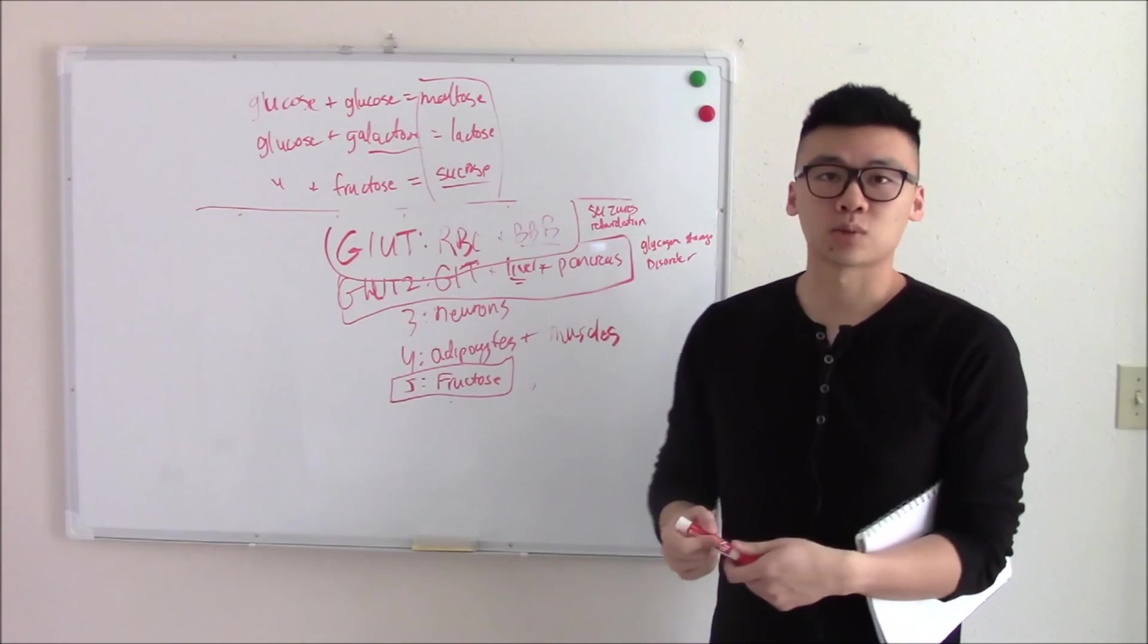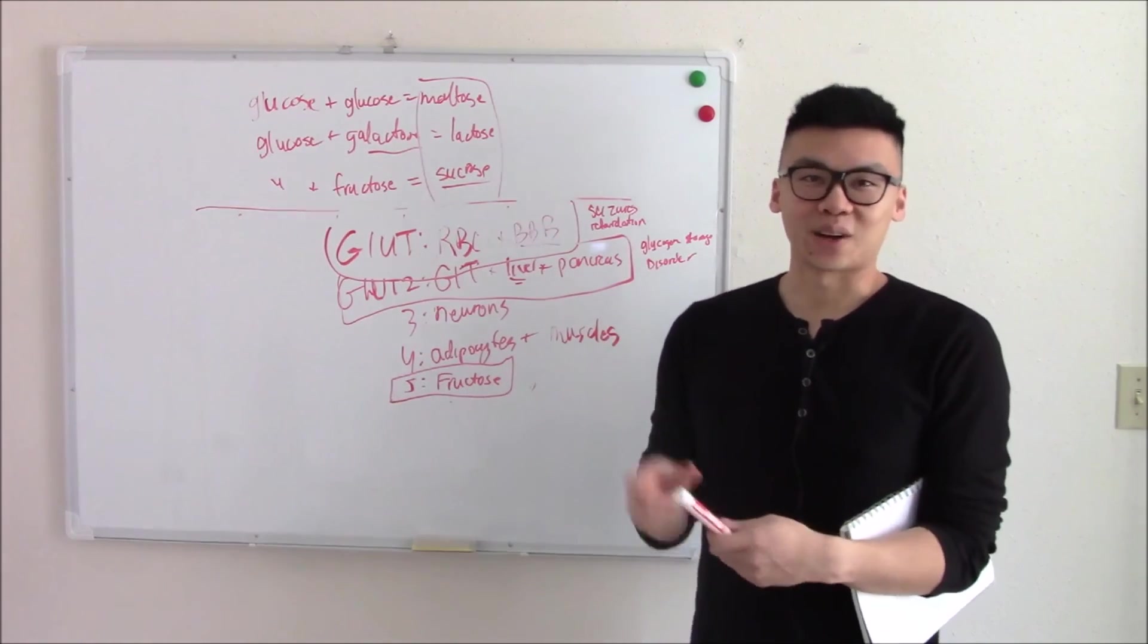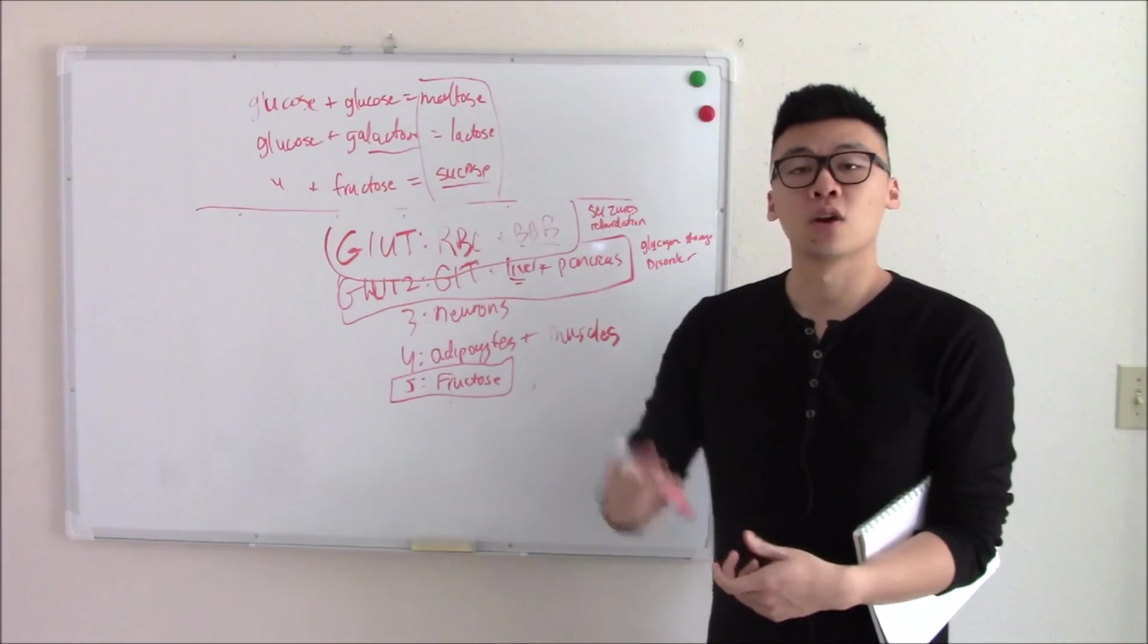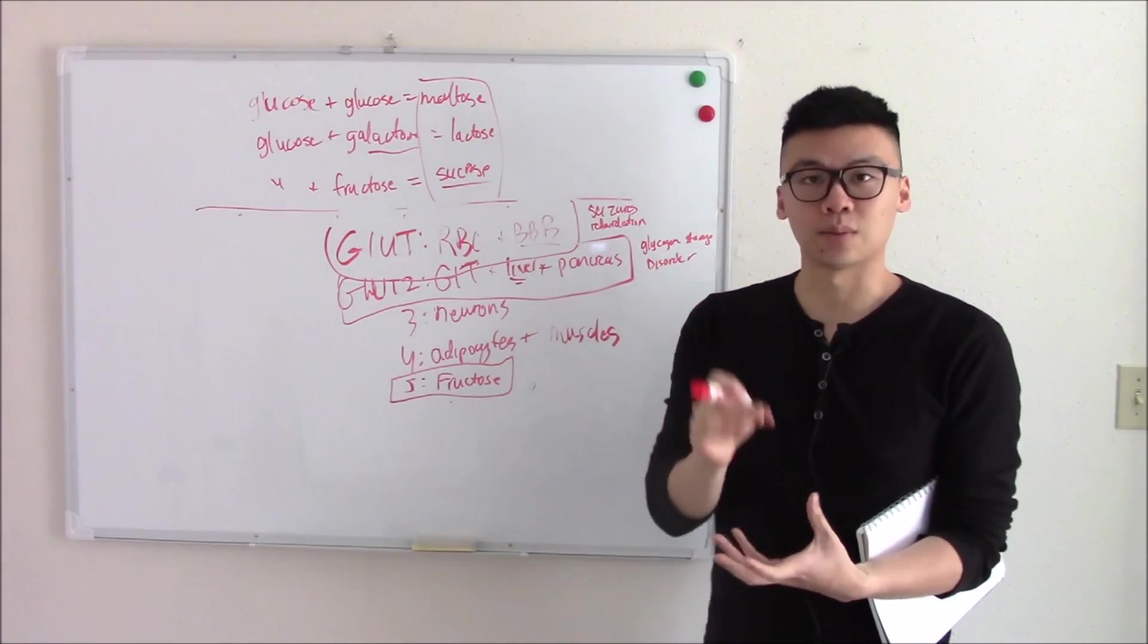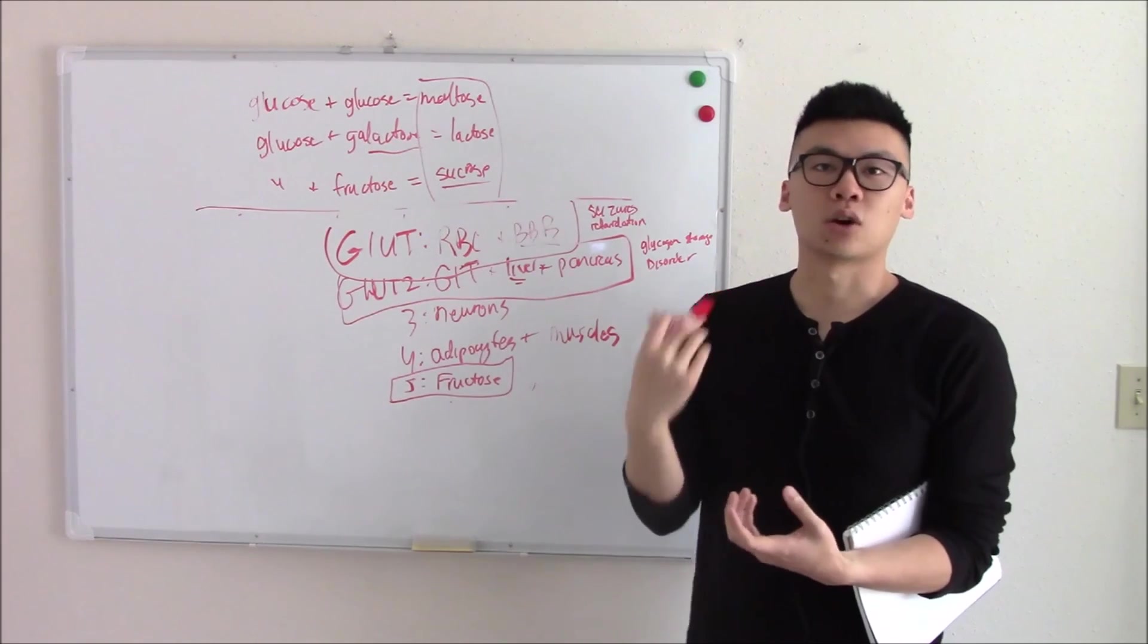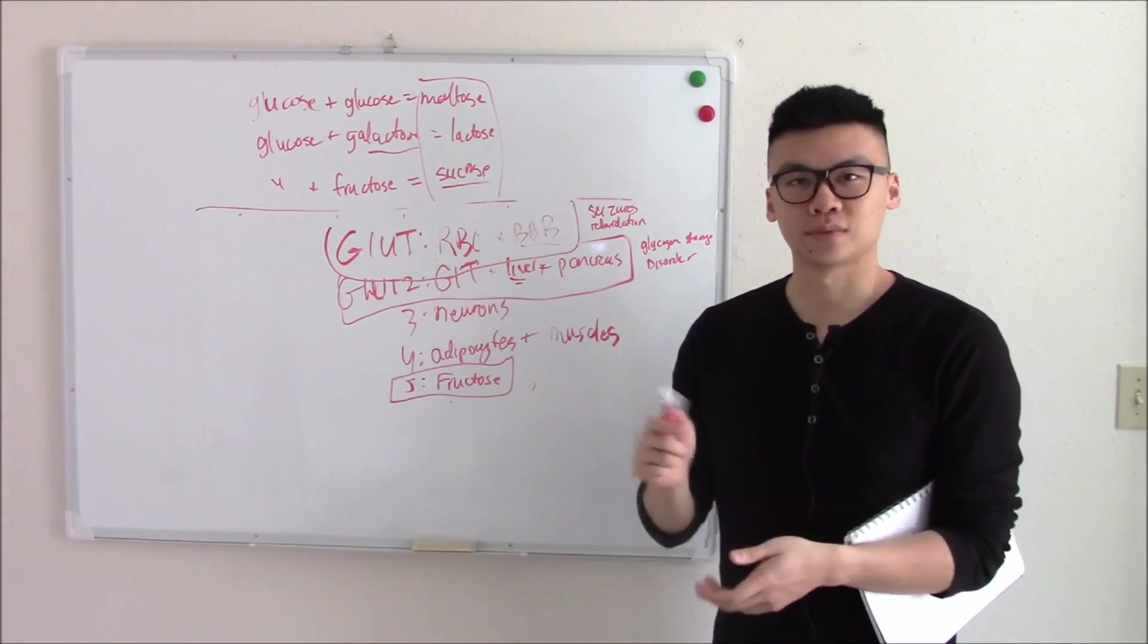That does it for the transport of glucose. We're kind of beating it around the bush. Now we're going to really dive into the biochemistry of it. We're going to talk about breaking it down chemically, breaking glucose down chemically into its building blocks. That's called glycolysis. That'll be in our next video. See you then.